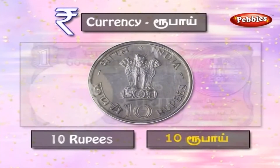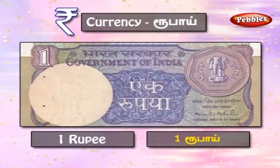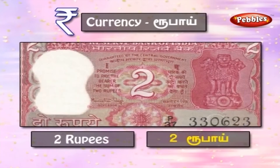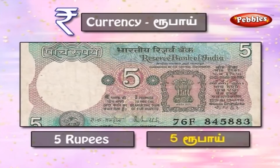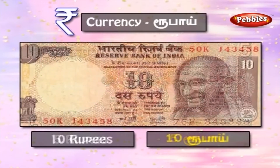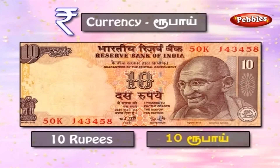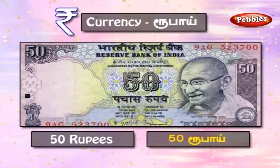1 rupee — 1 Rubai. 2 rupees — 2 Rubai. 5 rupees — 5 Rubai. 10 rupees — 10 Rubai. 50 Rubai — Rs. 50.